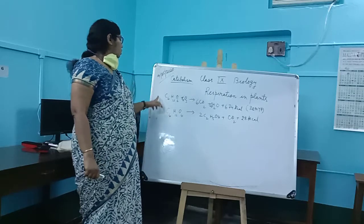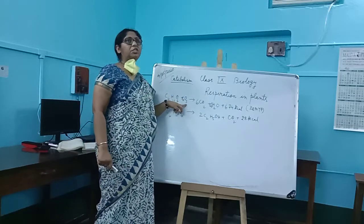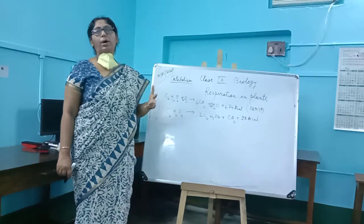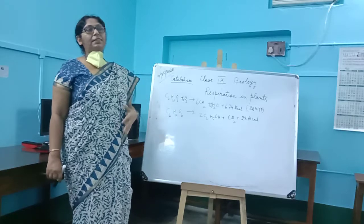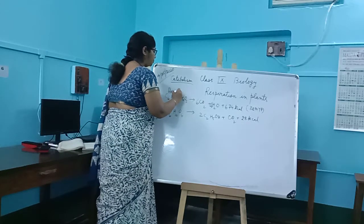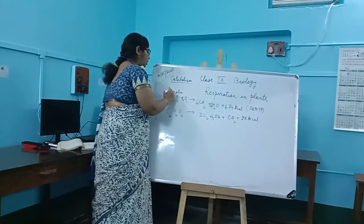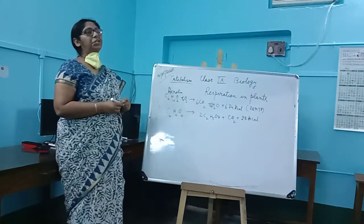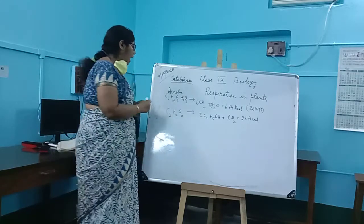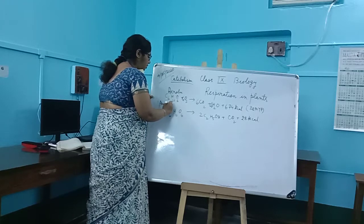In this equation you can see that oxygen is being utilized, so we can call it aerobic respiration. The respiration in which oxygen is required or used up is known as aerobic respiration. Apart from that, respiration can also occur in the absence of oxygen — that is known as anaerobic respiration. 'An-' in front of aerobic means in the absence of oxygen.